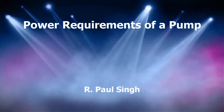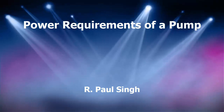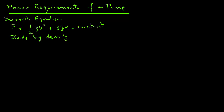Let's consider power requirements of a pump that's being used to convey water from one tank to another. We will revisit the Bernoulli equation. In our previous module, we saw that the Bernoulli equation is P plus one-half rho u-bar squared plus rho g z equals constant. We can also rewrite this by dividing with rho: P over rho plus one-half u-bar squared plus g z equals constant.